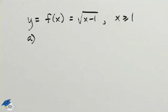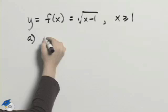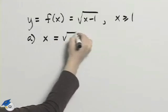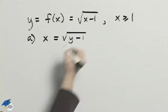Now, in part A, we want to find the inverse of f. We'll do that by switching around the x and the y. So we'll have x equals the square root of y minus 1.